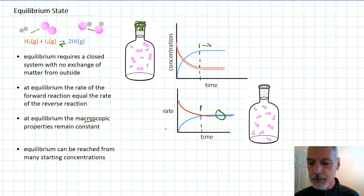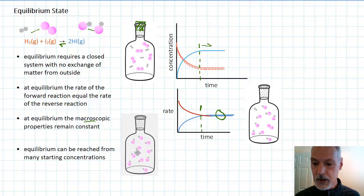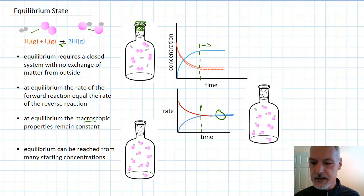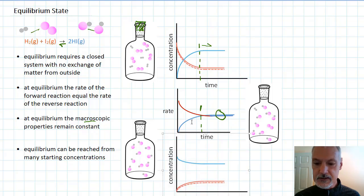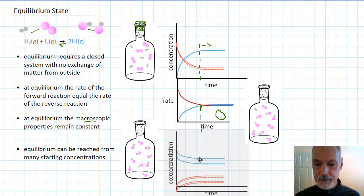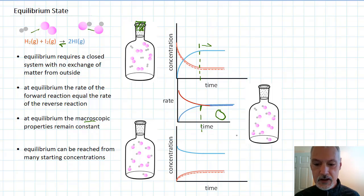A final feature of equilibrium is it can be reached from many starting concentrations. What that means is, suppose I change my starting situation. Suppose I have a bottle which begins with just hydrogen iodide in it. If I put those in and allow them to react, I will essentially reach the same concentrations that I reached in my situation up here. So here's a picture of what they look like starting with only reactants. Here I am starting with products, and yet I finish in exactly the same situation. So these are a few features you need to keep in mind about the equilibrium state.